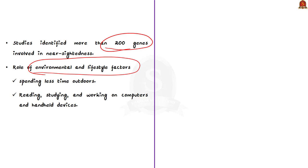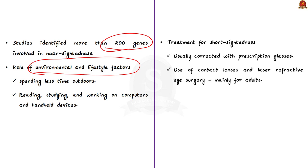So far we have discussed myopia, its symptoms, and its causes. Now let us discuss treatment for myopia — treatment for shortsightedness or nearsightedness. The most common treatment is prescription glasses. These lenses correct the light entering the eye and ensure the light focuses correctly on the retina. In addition to prescription glasses, contact lenses are also available and do the same job — they correct the light entering the eye so it falls correctly on the retina.